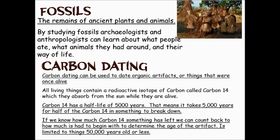Carbon dating is limited to things 50,000 years old or less to be terribly accurate. There are also other ways we can date things — relative dating, where we know the date of something and find items in the same layer of soil. There are also some other more modern types of dating that you may want to do some research on yourself.